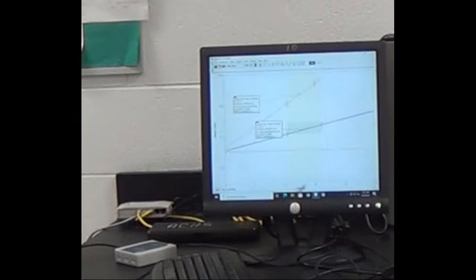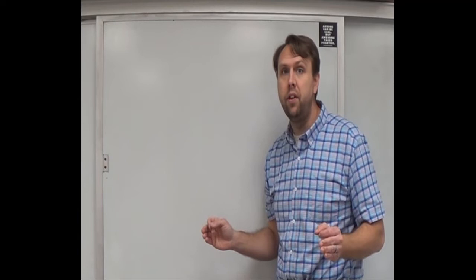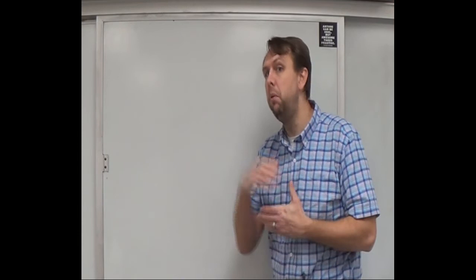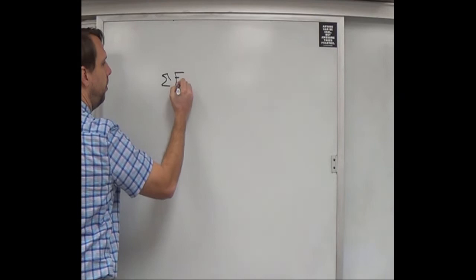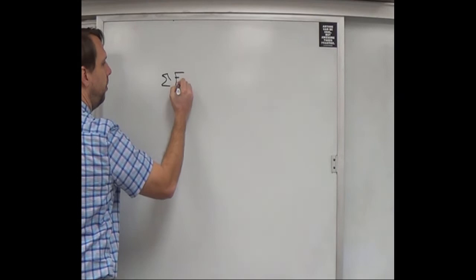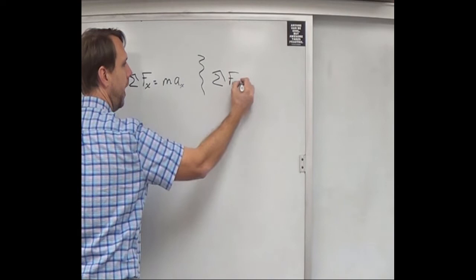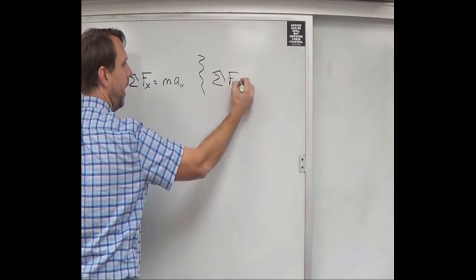We will often use Newton's second law to solve problems in physics. You start by doing a free body diagram to identify your forces. Then you add up all the forces in a particular direction and set them equal to ma. You can write the sum of forces in the x-direction equals mass times acceleration in x, and separately the sum of forces in the y-direction equals mass times acceleration in y.